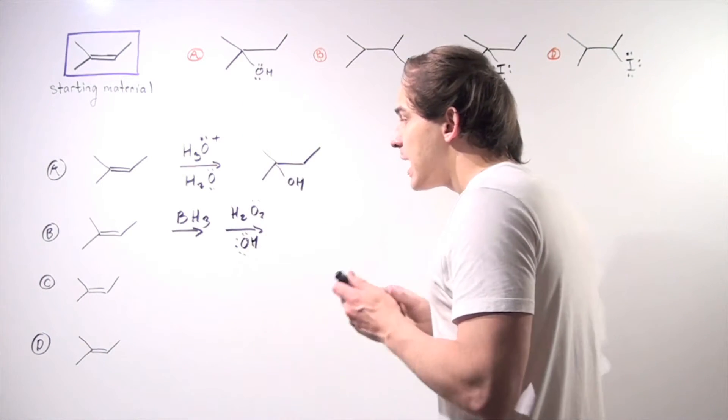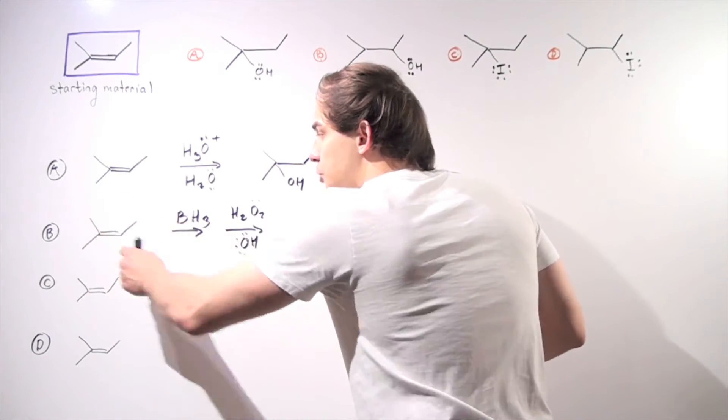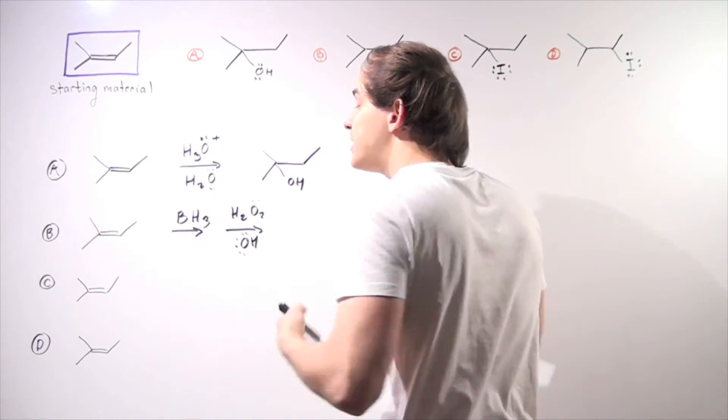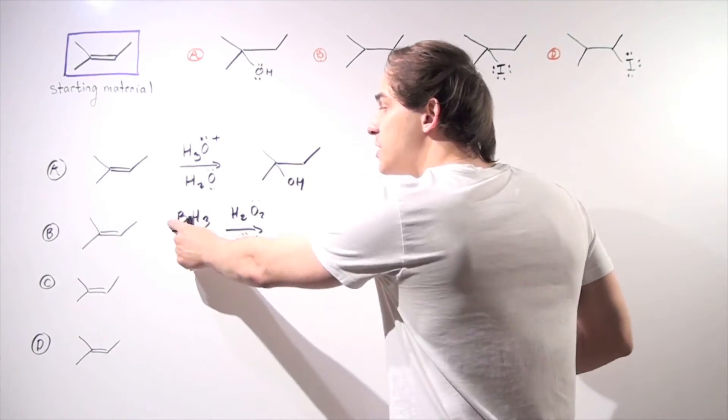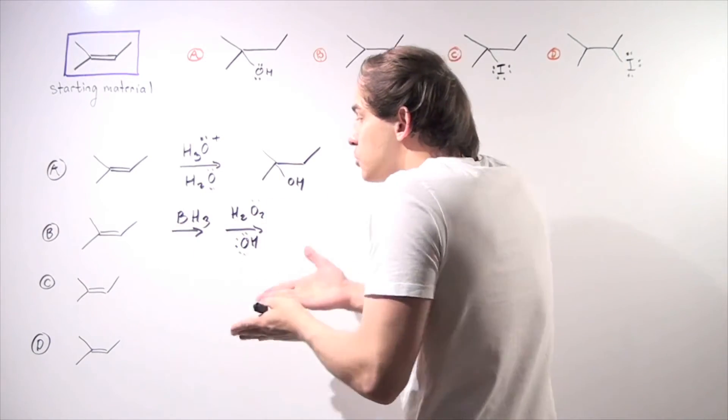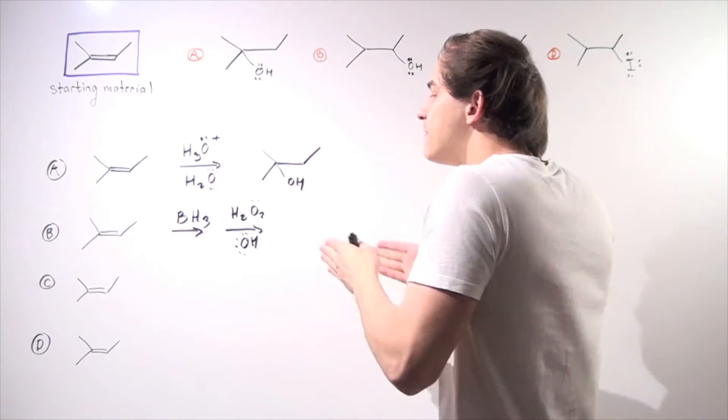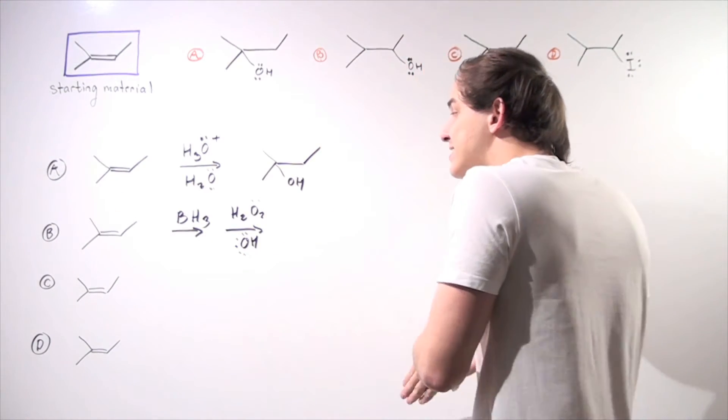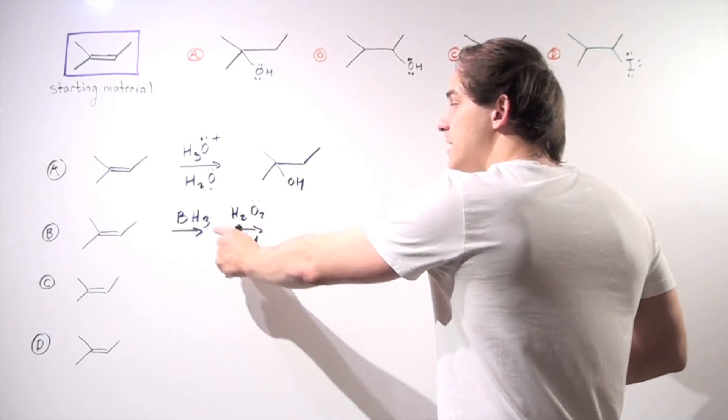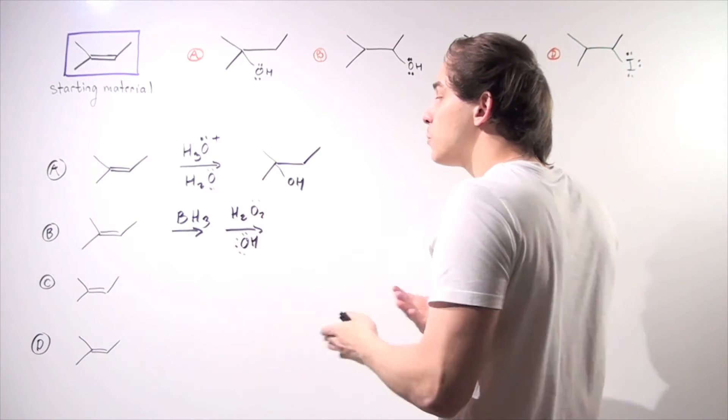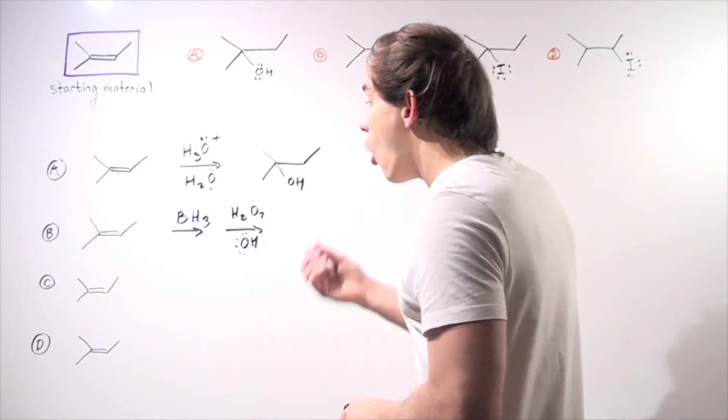So what happens here is this reactant reacts three times with this boron. So we produce our BR3, where R is simply our alkyl group.